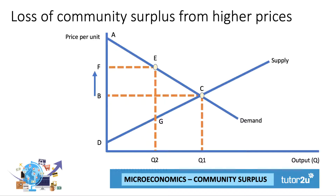Let's think about how we can affect the level of community surplus. Take, for example, a business that might develop some monopoly power in the market. Instead of selling Q1 at price P1, now they sell Q2 at a higher price — the price goes up to F. This could be an example of a monopoly producer deciding to exploit their monopoly power to restrict output to Q2 and charge a higher price of F.